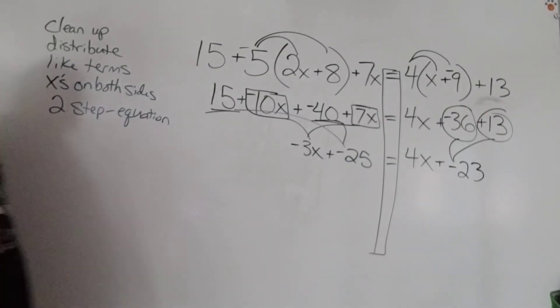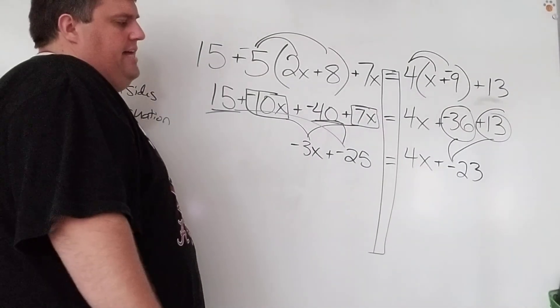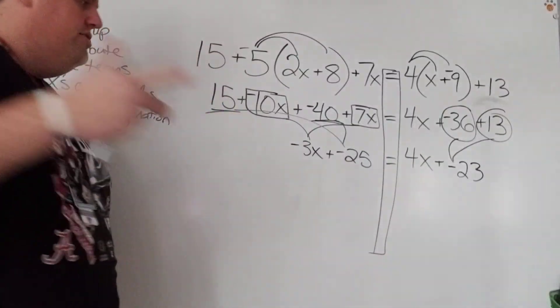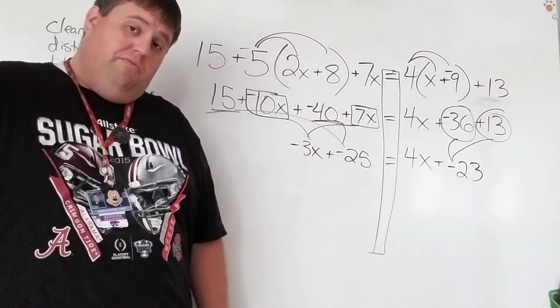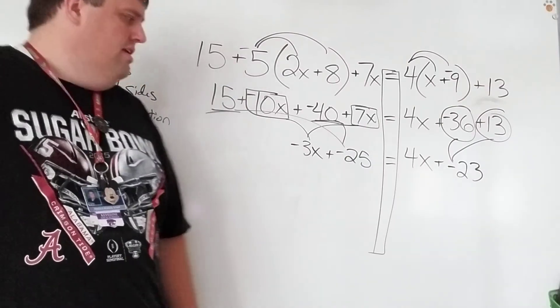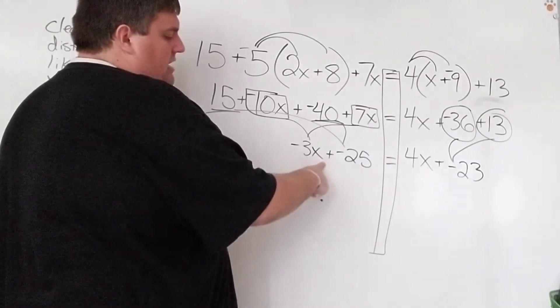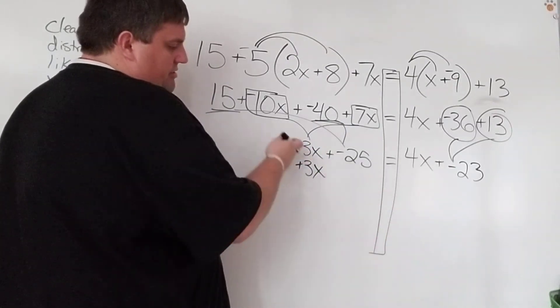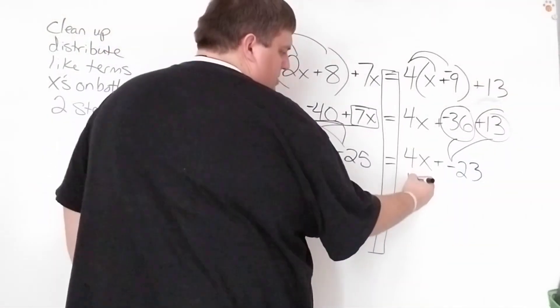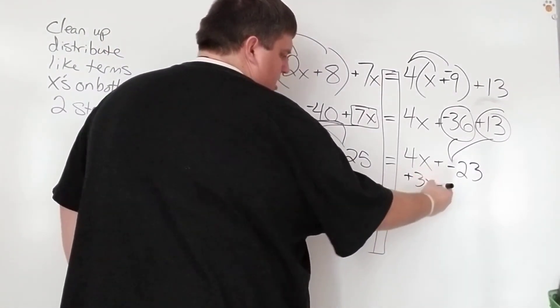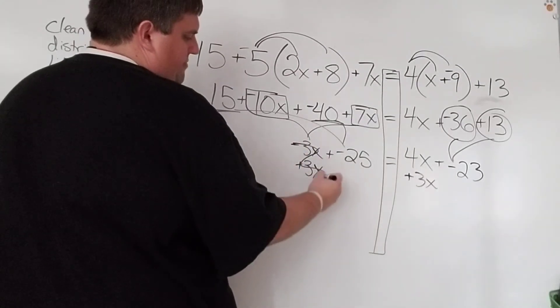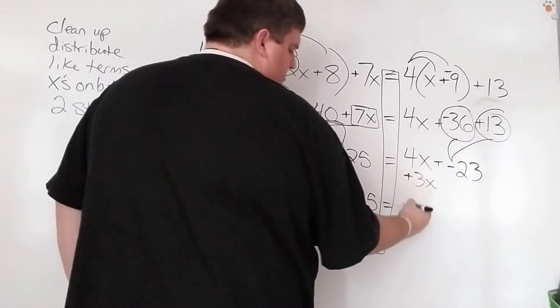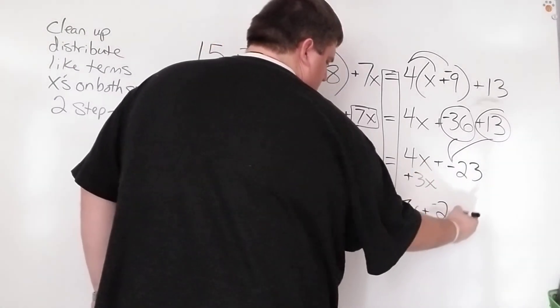Now we're going to go on to x's. I do have x's on both sides. Now this time, I have a 4x here. I have a negative 3x here. So I would actually get rid of the negative 3x because it's negative. So how do I get rid of negative 3x? I would add 3x. Just like before, I'm going to subtract it, only this time it's negative. So I'm going to match it up over here. Add 3x. Those are going to cancel out. Give me negative 25. 4x plus 3x is 7x's. And that's negative 23.